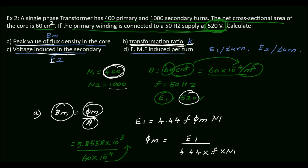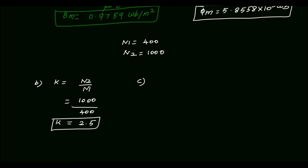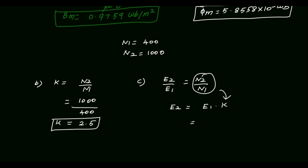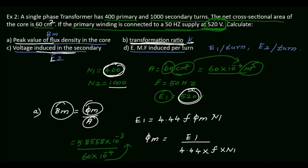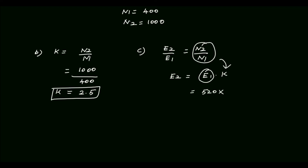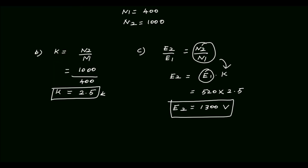Third, we calculate the voltage induced in the secondary E2. We know that E2 ÷ E1 = N2 ÷ N1, so E2 = E1 × (N2 ÷ N1) = E1 × K. E1 = 520V and K = 2.5, so E2 = 520 × 2.5 = 1300 volt.